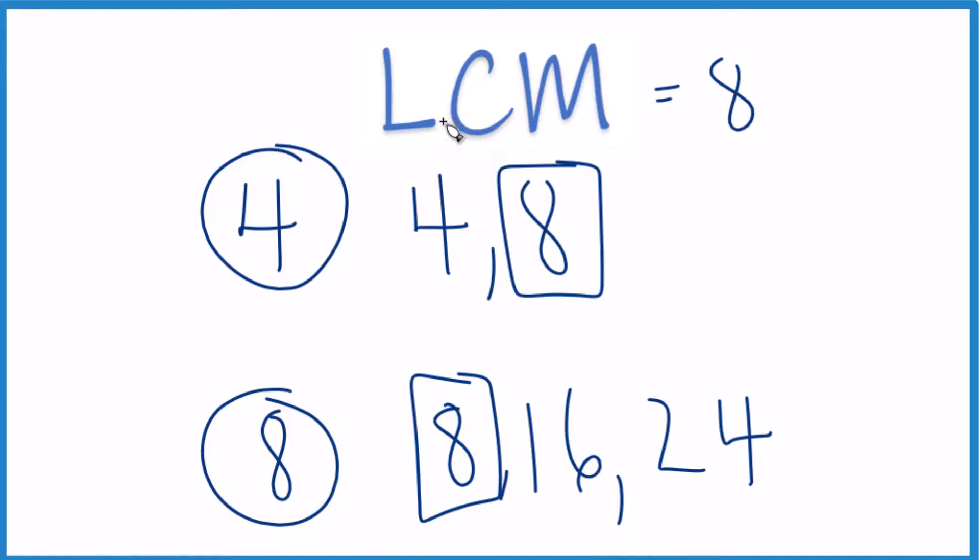You could find the factors by saying 1 times 4 is 4, 2 times 4 is 8, 3 times 4 is 12, and so on. Or you can just add them together to get those multiples.